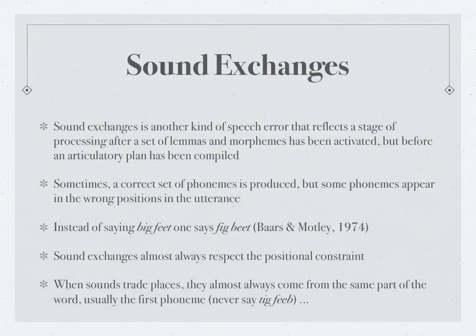Each phoneme is marked with an ordered tag which tells the production system which phoneme comes first, which comes second, and so on. Because two syllable frames are activated simultaneously, two phonemes that have first-ordered tags are also activated simultaneously. Sometimes the production system will confuse the two and select the wrong phoneme for each of the two available first-phoneme slots. Generally the /b/ phoneme will have more activation early in the planning process and the /f/ phoneme will have more activation later, so mistakes will be relatively rare.